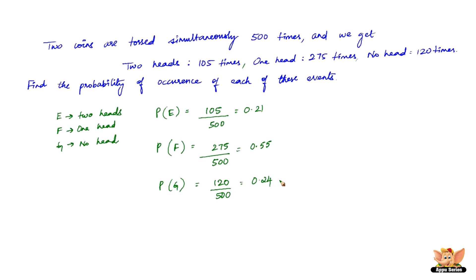Again, if you notice, the sum of 0.21, 0.55, and 0.24 is 1. So E, F, and G cover all the outcomes of a trial. In case this doesn't sum up to 1, then we've definitely missed out one of the outcomes — that's what this means.